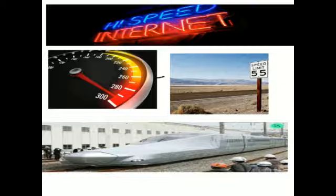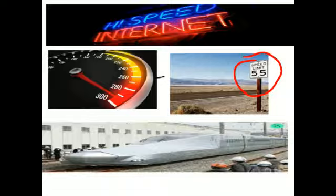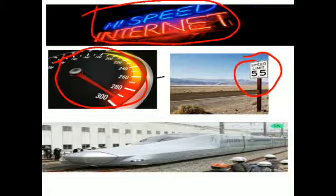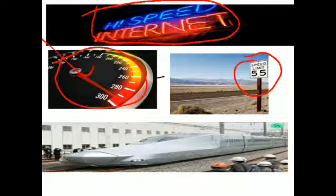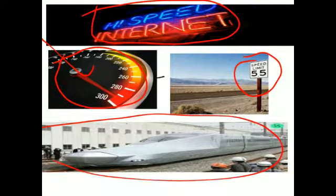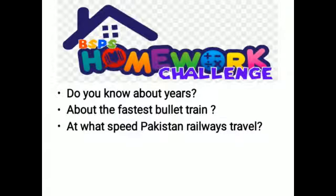We see many things related to speed in normal life. When we move on a motorway, we see speed limits — the police authorities set the maximum limit for vehicles. We are also concerned with internet speed, and high-speed internet is always welcomed. There is a speedometer in our motorbikes and cars that shows us at what speed we are moving. This picture — taken from the internet — shows the fastest bullet train in the world; you can Google it.